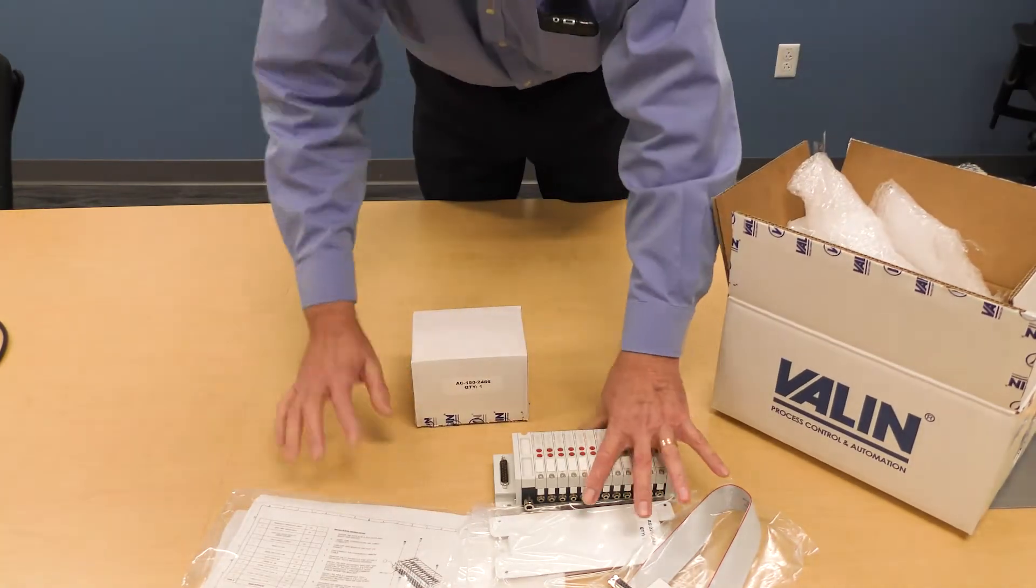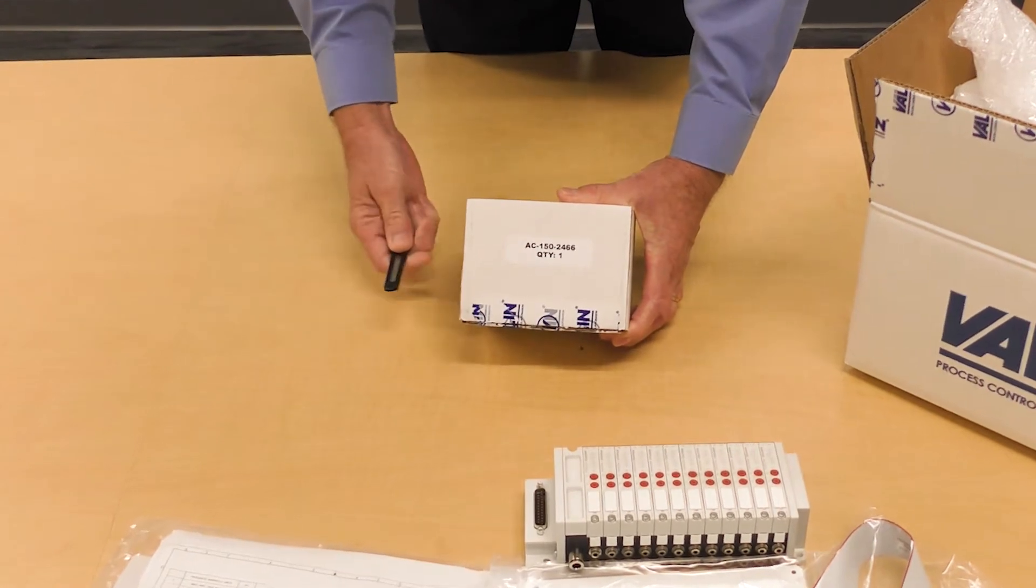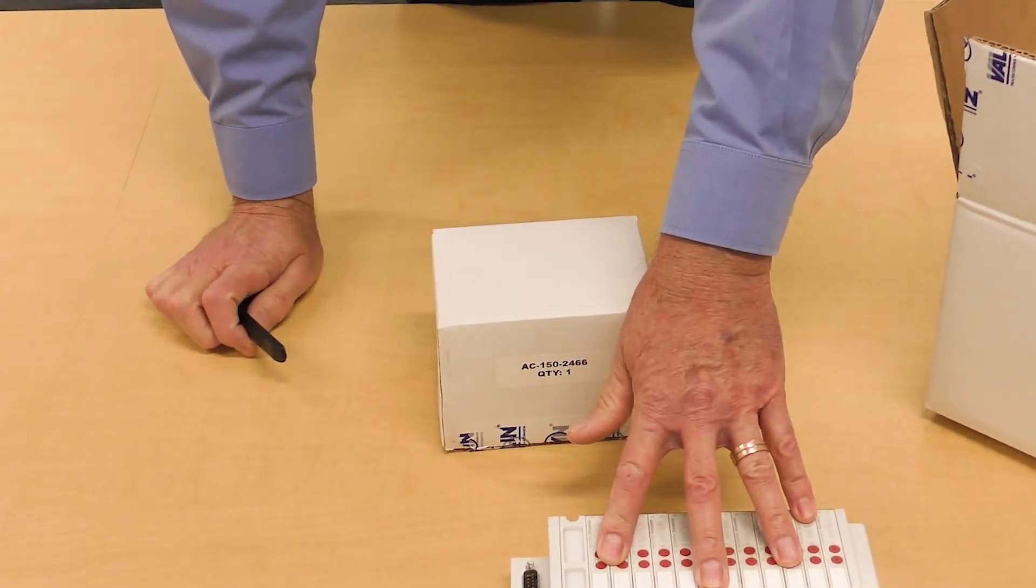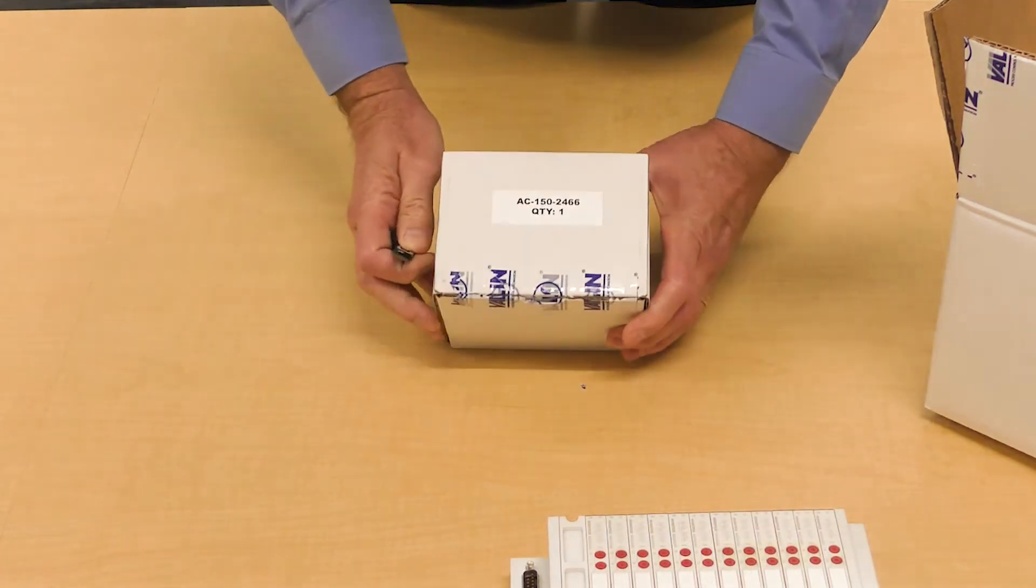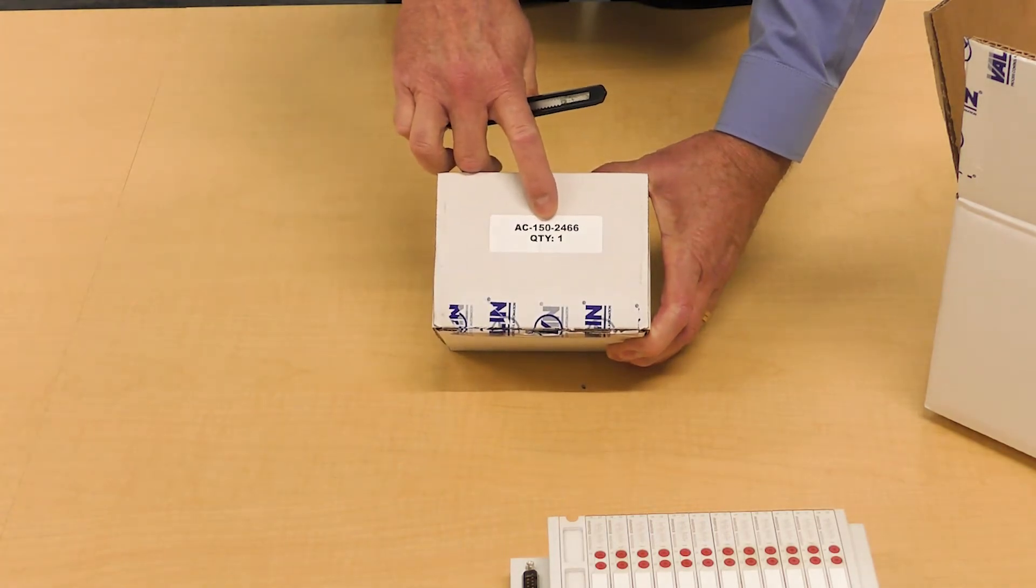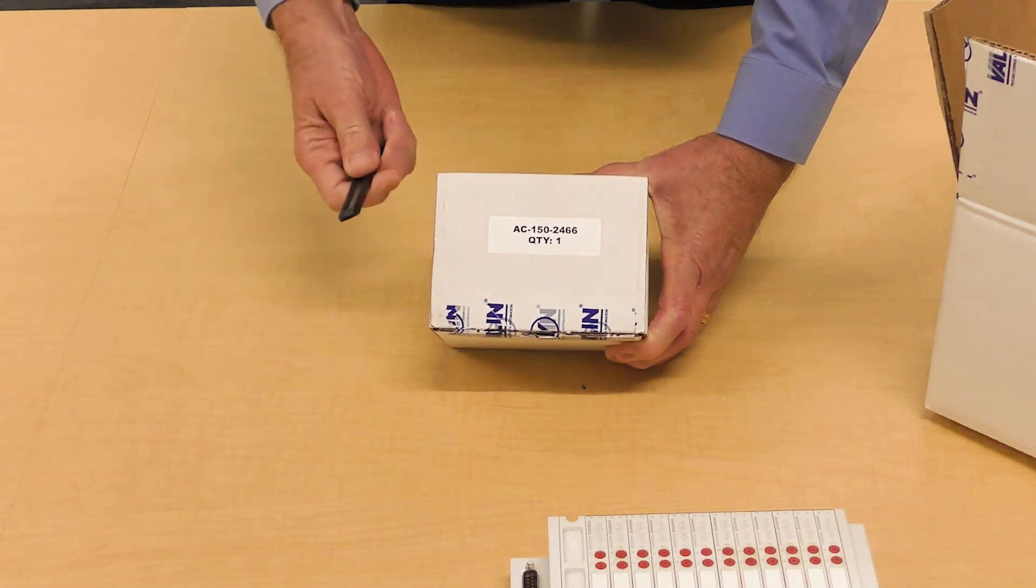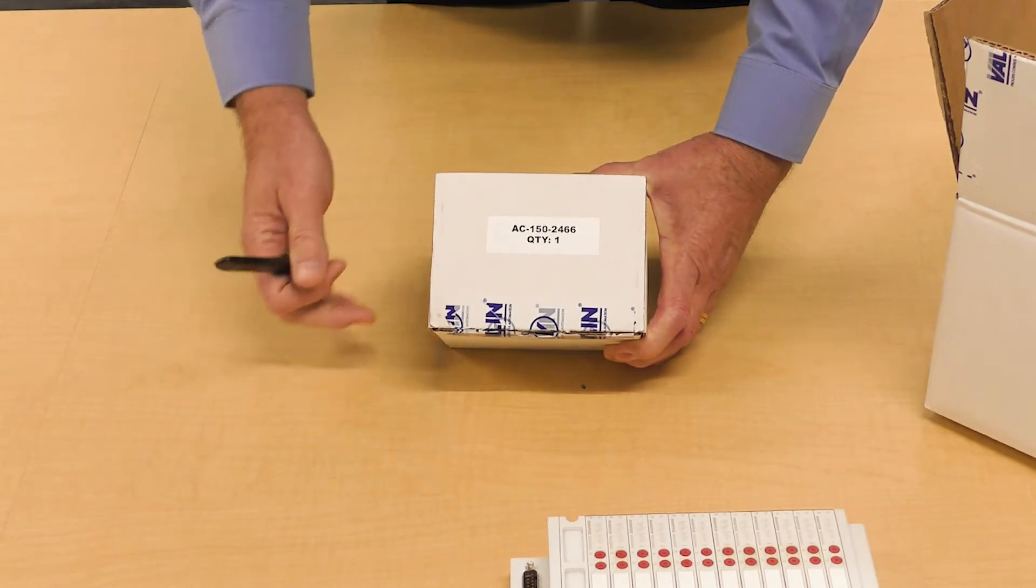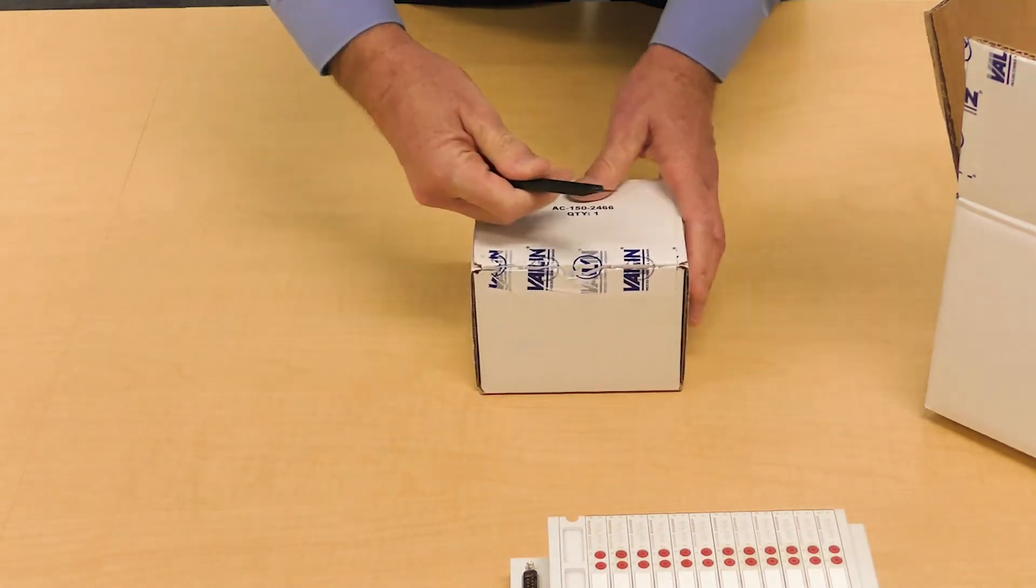Now here is my interlock accessory kit that allows me to adapt this manifold to my existing NF3 interlock system on my tool. This part number is AC-150-2466 and can be ordered separately so you only order as many as you need.